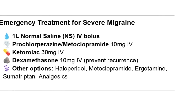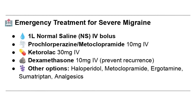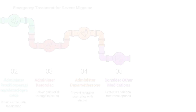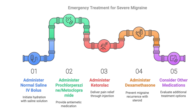For treating a severe migraine in the ER, they start with an IV bolus of one liter of normal saline solution, then may give prochlorperazine or metoclopramide — anti-nausea meds — ketorolac, which is an NSAID given through the IV for pain, and dexamethasone, a steroid to try to stop the migraine from coming back too soon. Other options include haloperidol, metoclopramide at a different dose, ergotamine, sumatriptan, and other pain meds — addressing the pain, nausea, and trying to prevent recurrence.